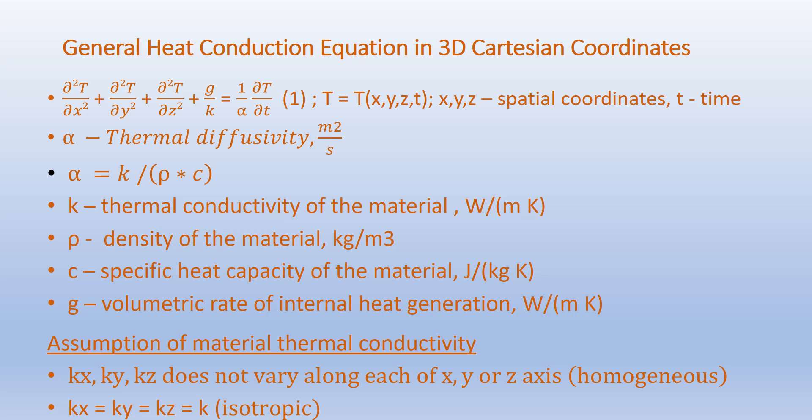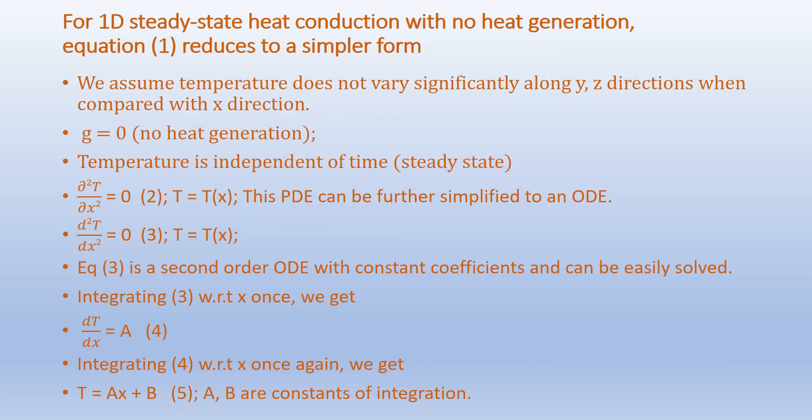Our assumptions regarding material thermal conductivity are as follows. We assume that the thermal conductivity does not vary along the x direction, likewise it does not vary along y and z directions, so we consider homogeneous values at each of these directions. We also assume isotropic conditions, meaning kx equals ky equals kz equals k.